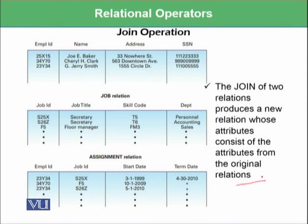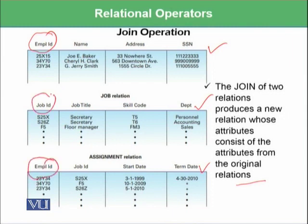For example, if you want to join three relations, you can join them using those attributes which are common across these relations. For example, employee ID can be joined over here, and job ID can be joined to get meaningful information.